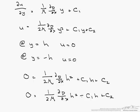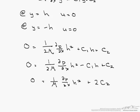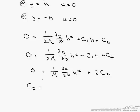So this is going to be 0 equals, we add the two of these together, so it is 1 over mu instead of 1 over 2 mu dp/dx times h squared. Now we can solve for c2, which equals minus 1 over 2 mu dp/dx times h squared.